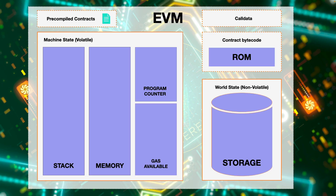Inside of this virtual OS there is a CPU called the EVM, and the EVM is a computation engine similar to the Java Virtual Machine if you're familiar with Java. The EVM is also a runtime environment for executing smart contracts, and it holds all of the state or data that exists in Ethereum, as well as all of the accounts.